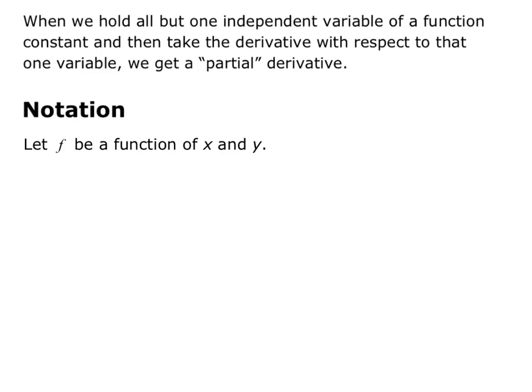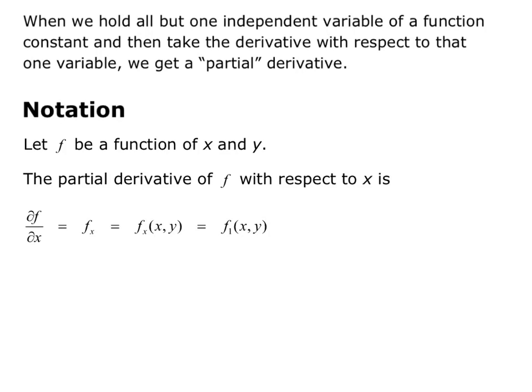This has its own notation. We'll let f be a function of x and y. Then the partial derivative of f with respect to x is written with a curly d referred to as del, so del f over del x. It can also be written as f sub x, or f sub x of (x, y), or f sub 1 of (x, y). Depending on the text or site you're looking at, it could be any of these notations, all meaning the partial derivative of f with respect to x. Oftentimes we'll just say it as partial f partial x.